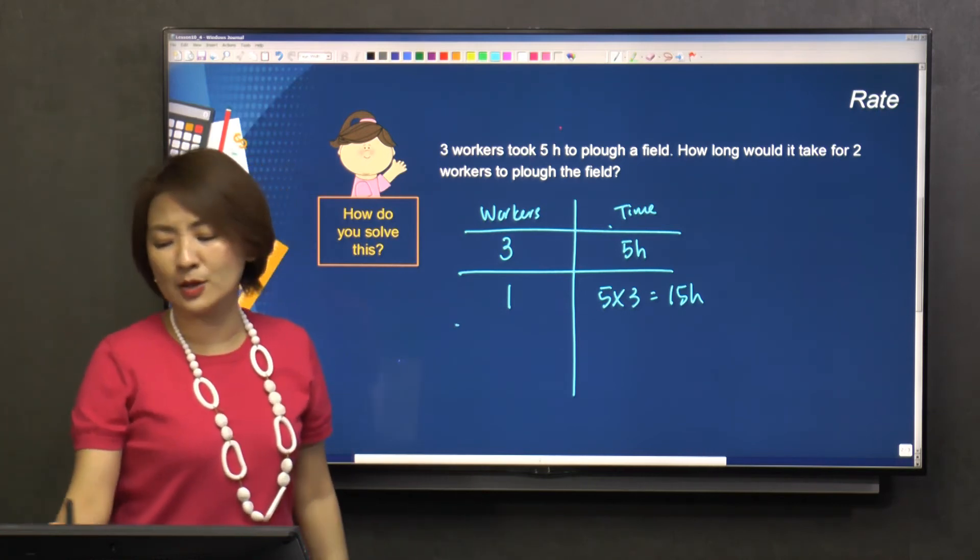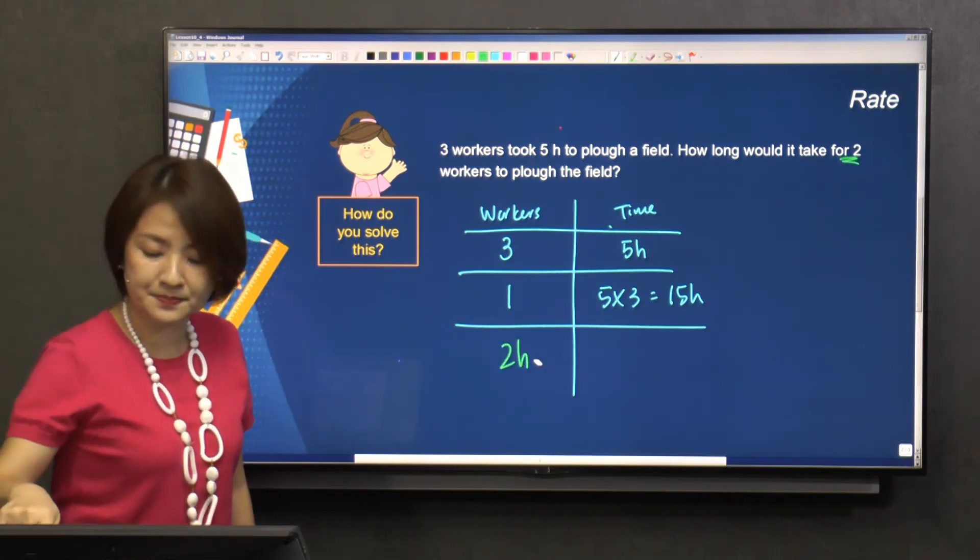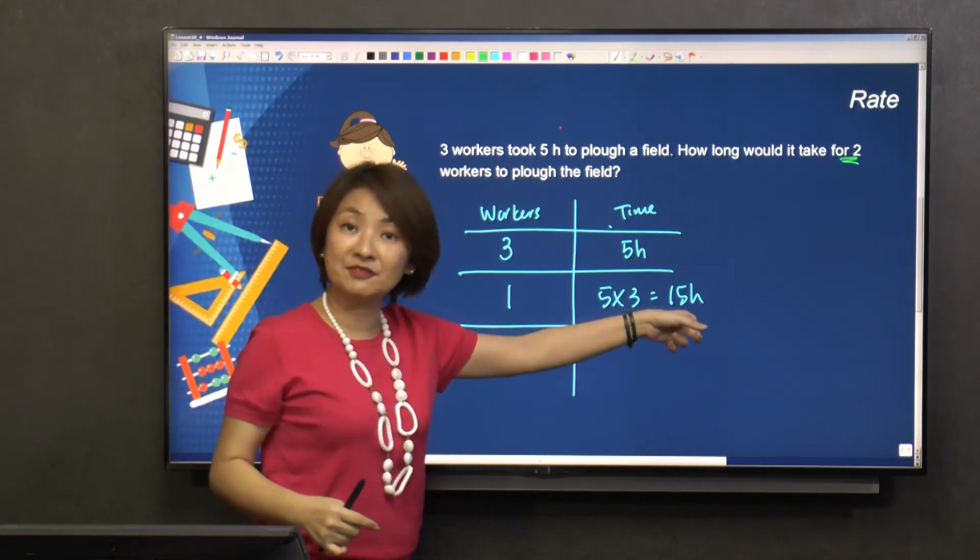Now, what if I say, ah, you're so pitiful. Okay, how about I put in two workers? I bring another worker. So should the amount of hours be more or less than 15?